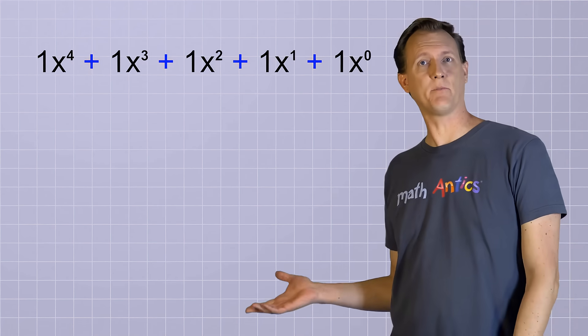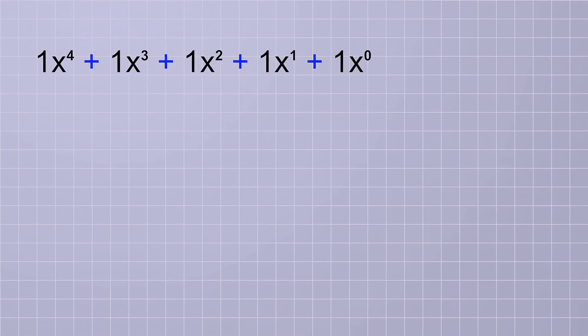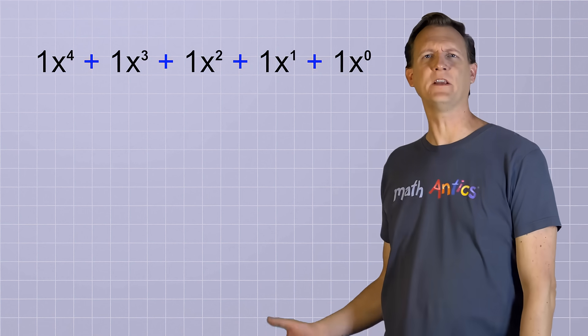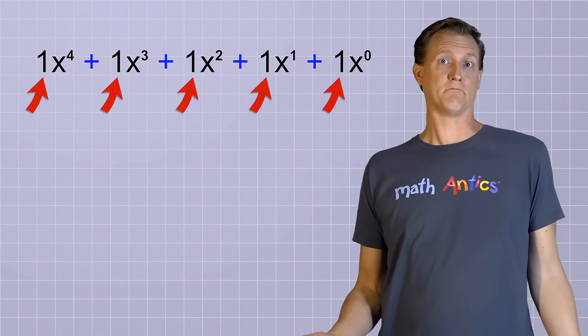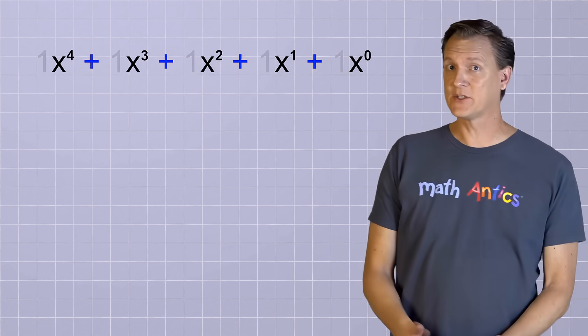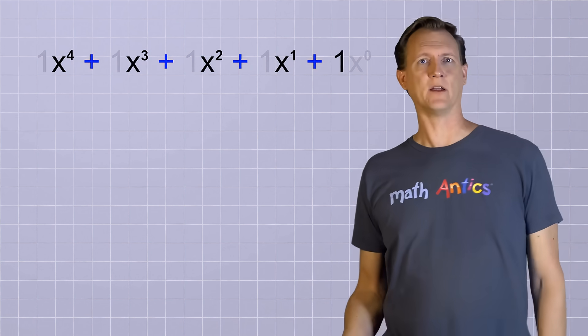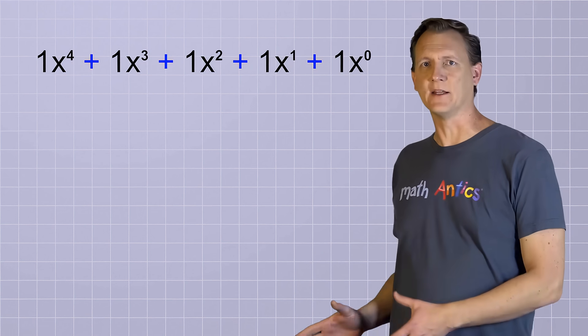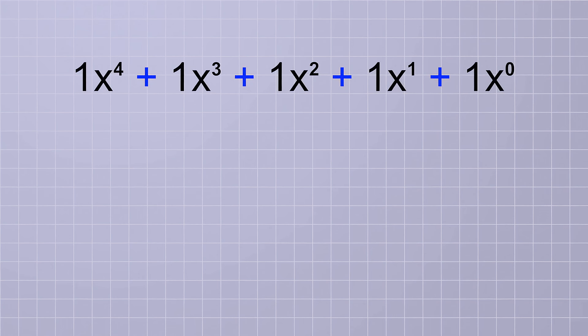To see how that works, have a look at this basic polynomial that follows an easy-to-recognize pattern. Of course, as I mentioned in the last video, we don't really need to show the coefficients of each term if they're just 1, like we have here. And the x to the 0 term is also just 1, so we don't really need to show that either. But I'm going to leave it like this just for a minute to illustrate my point. As you can see, this polynomial has a term of every degree from 0 up to 4.